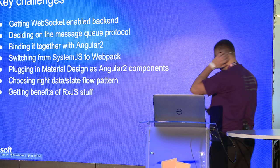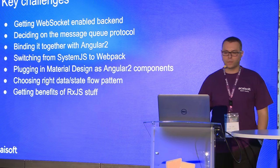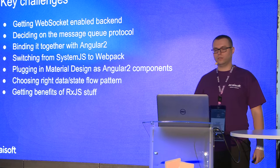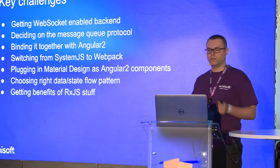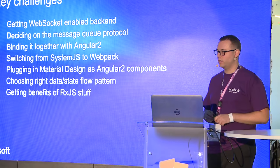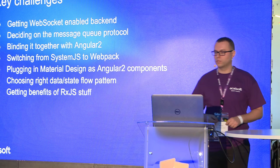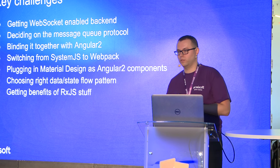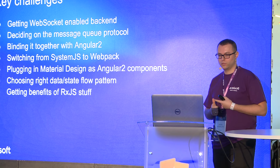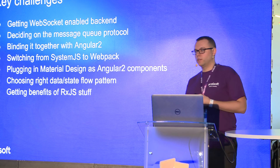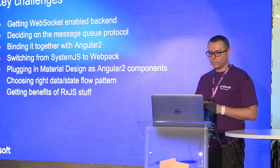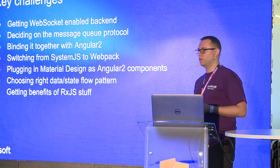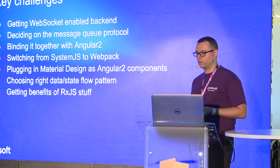Let's cover the key challenges we faced. First, web sockets are still not that widely used, so getting a web socket-enabled back-end is sometimes tricky. We tried different solutions, and AWS IoT works best for two reasons: one is the MQTT protocol, which is very efficient — it's a binary protocol, better than AMQP or STOMP for this type of thing. The other is that there's already a nice browser-based MQTT library, so integration works out of the box.